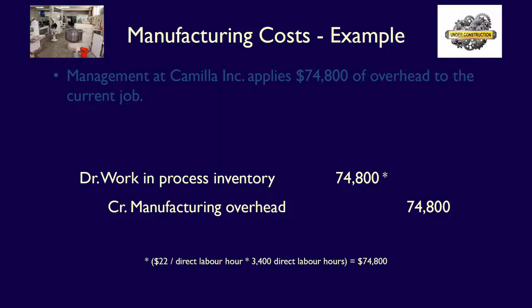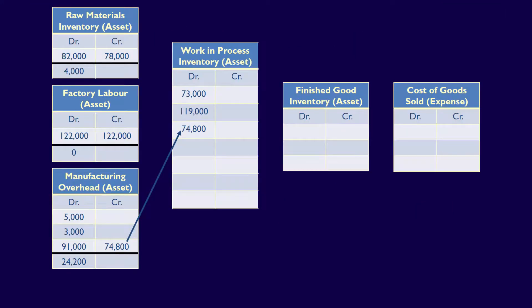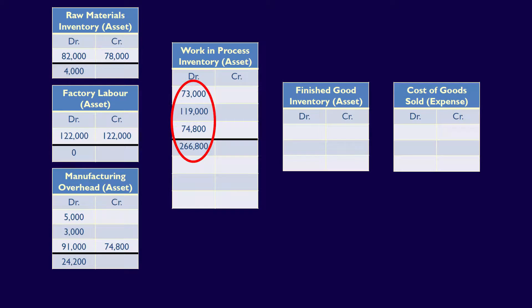Let's flow this entry through the T-accounts. We credit manufacturing overhead for the overhead applied to the job and debit work-in-process inventory, both for $74,800. Note that the work-in-process inventory account now includes the direct material costs, direct labor costs, and the assigned costs for manufacturing overhead — all of the manufacturing costs that represent the cost of manufacturing this job. Since the job is now complete, we can calculate the total cost: $73,000 plus $119,000 plus $74,800 equals $266,800.